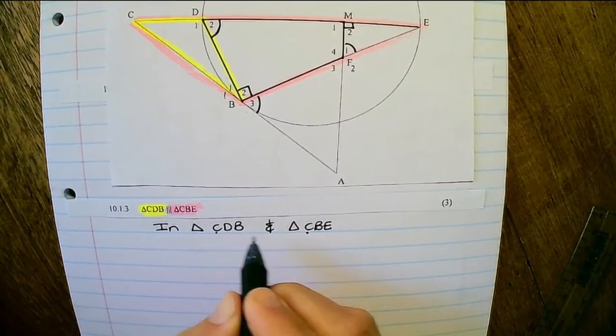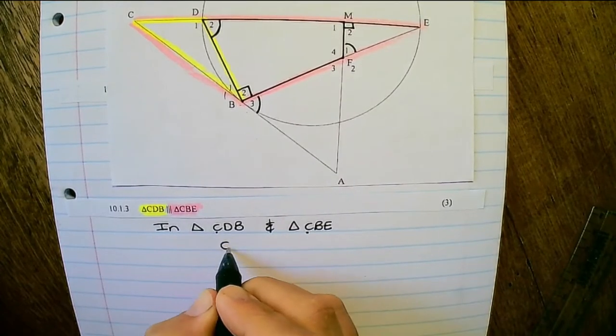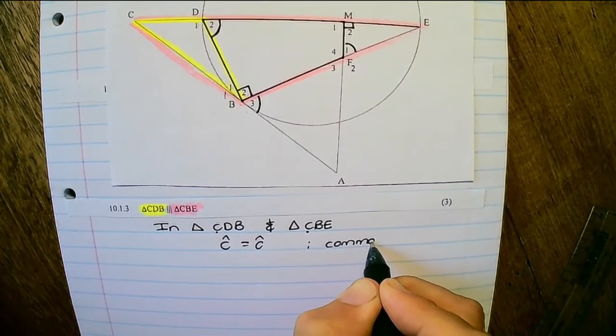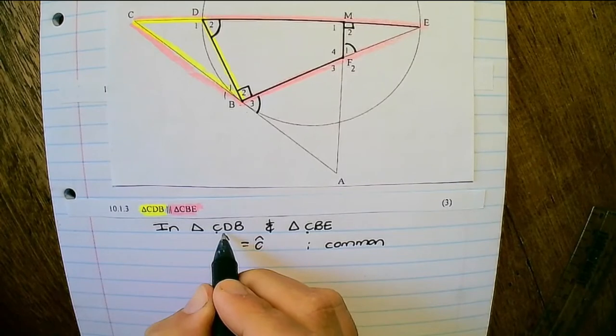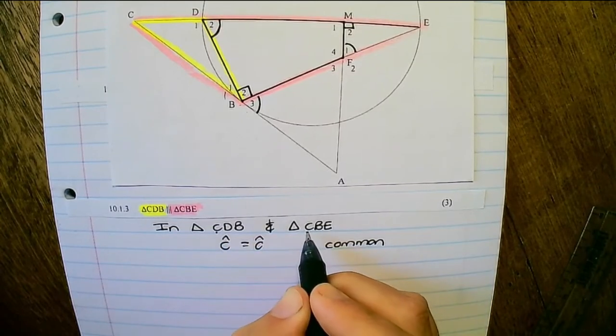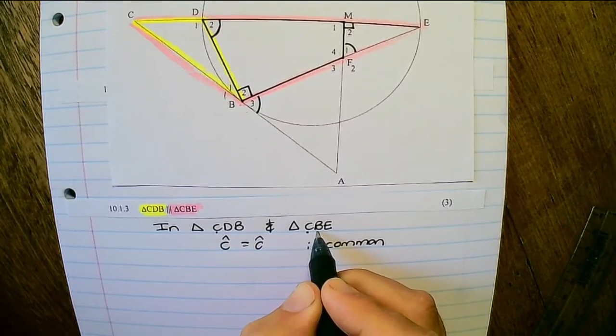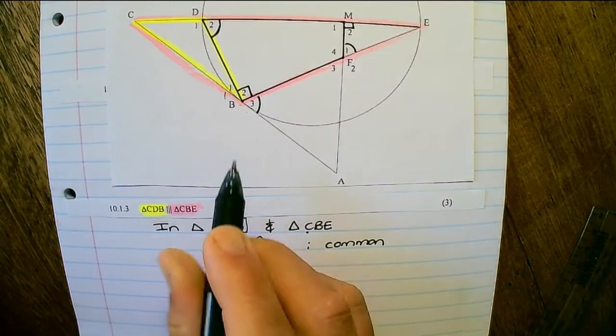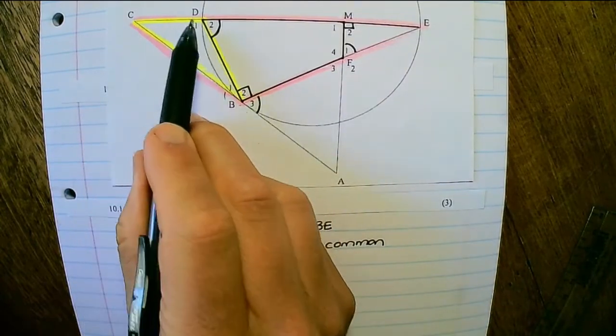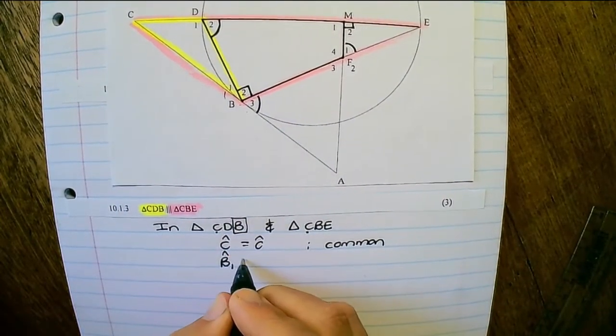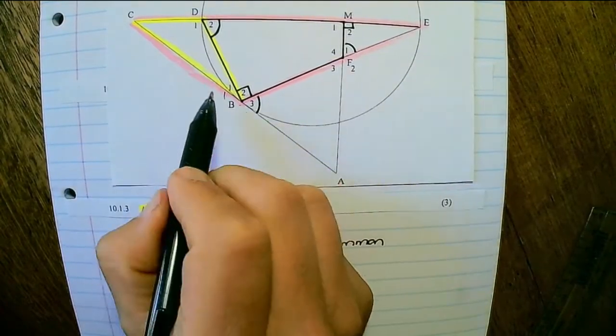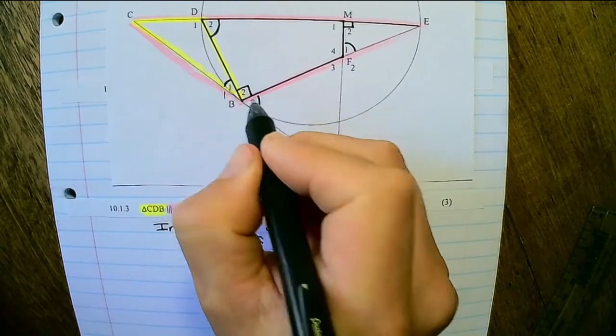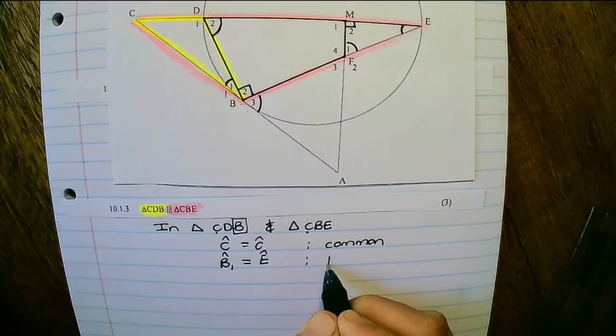Angle C. So angle C would be equal to angle C because they are common angles. Then to prove that D1 is equal to angle CBE is a bit tougher. So let's see angle B in the smaller triangle, which is represented by B1. So angle B1. And you can see this is the angle between a tangent and a chord, and that angle would be equal to angle E, tan-chord.